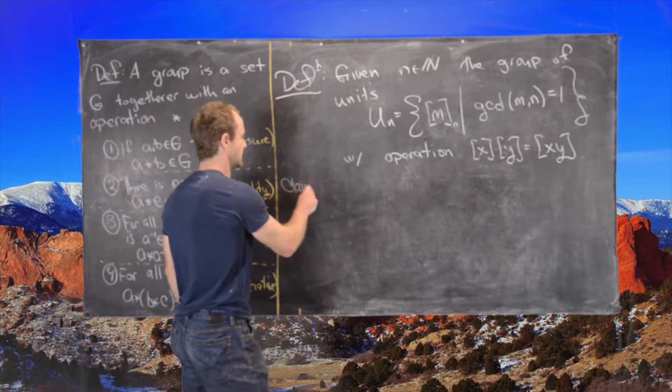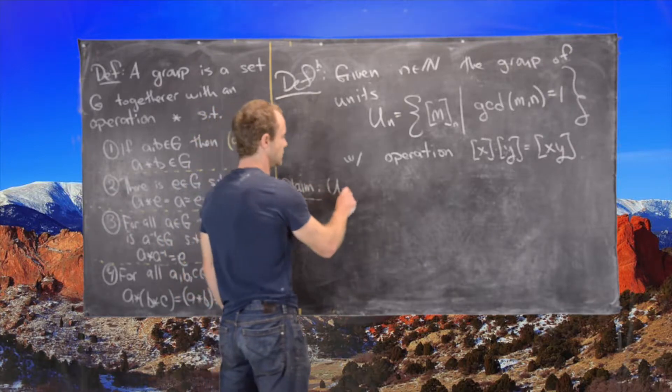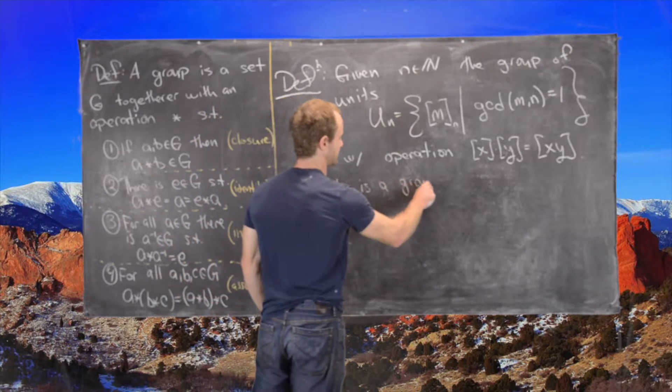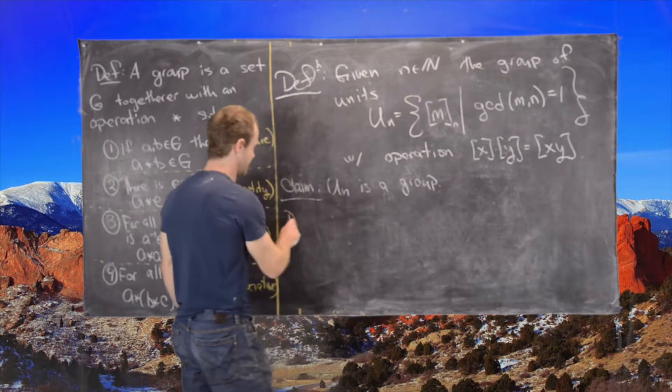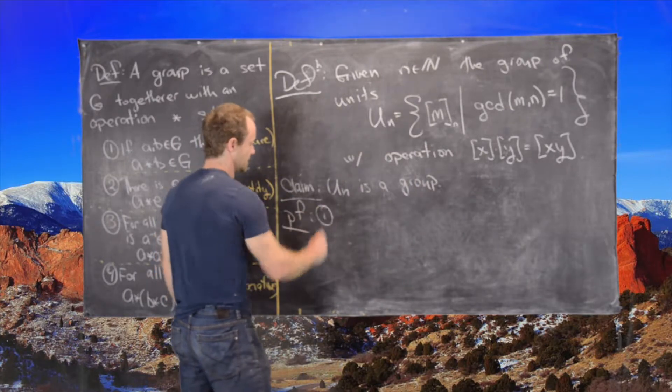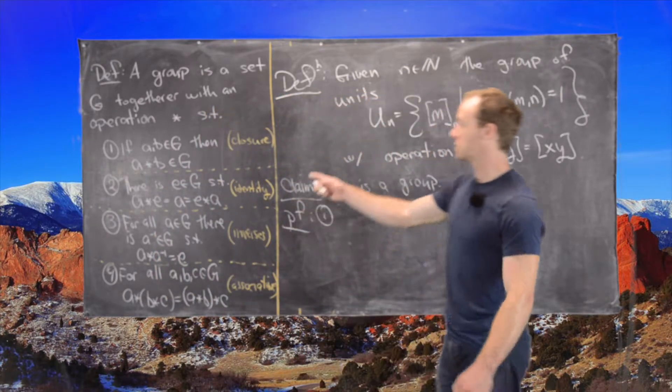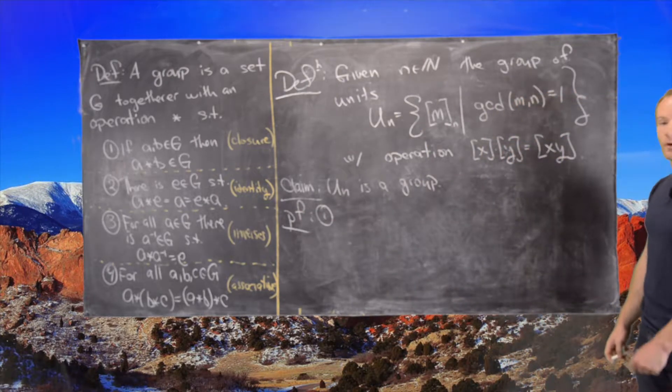Claim: Un is a group. Proof. Number one, closure. In order to prove that this is closed, we need to show that if x and y are relatively prime to n, then x times y is relatively prime to n.